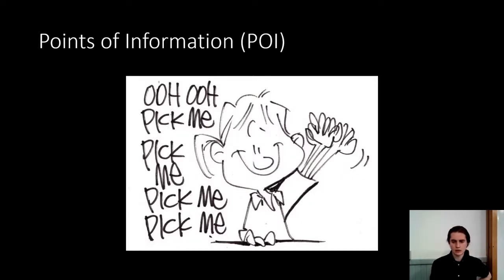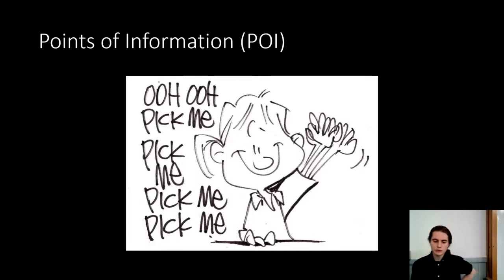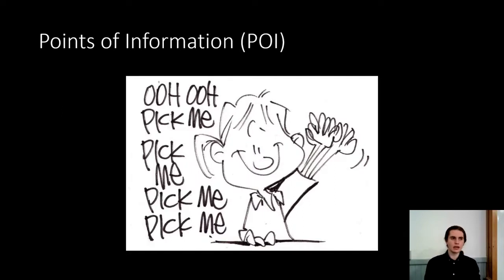Interrupting our presentation today, just as they will interrupt your speech, is a point of information. A point of information is a way for you to interact with the person who is currently speaking. You will stick up your hand and say 'point of information.' It is then completely at the discretion of the person speaking whether they wish to accept or decline that point of information. A point of information is a question, a statement, anything that you want, so long as it is within 15 seconds. You should try and interact with what the person who is currently speaking is saying — give them something new to consider, remind them of a point that you said previously, give them the rebuttal that you are currently thinking of. This is to foster what we call engagement and make sure that everyone is arguing with each other, not just past each other.